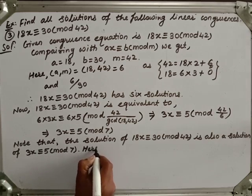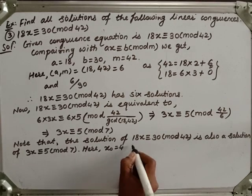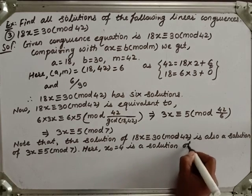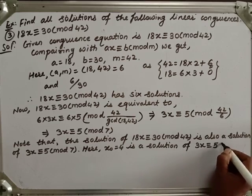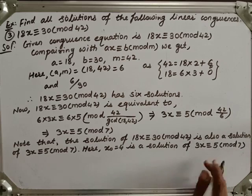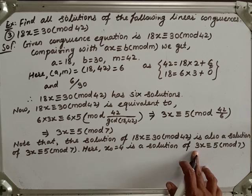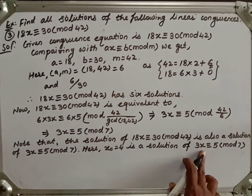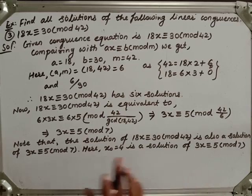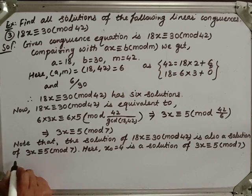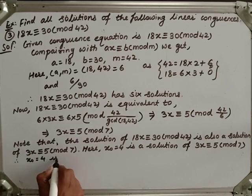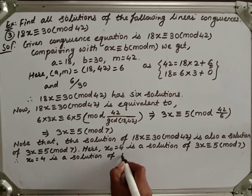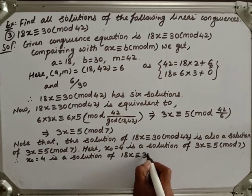Here x₀ = 4 is a solution of 3x ≡ 5 (mod 7). If we put x = 4, it gives 12 ≡ 5 (mod 7), so x = 4 satisfies this. That is why I am taking x₀ = 4 as a solution of this linear congruence. Therefore x₀ = 4 is also a solution of 18x ≡ 30 (mod 42).